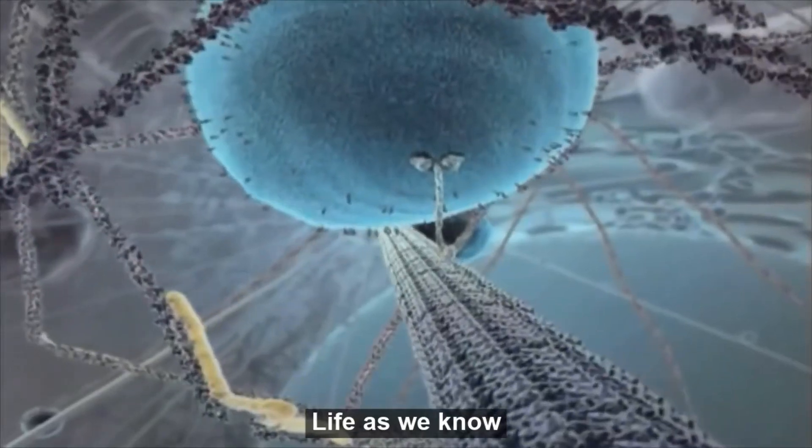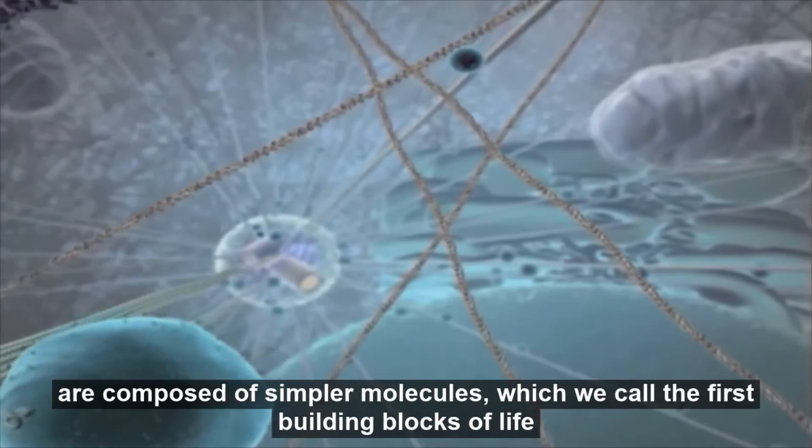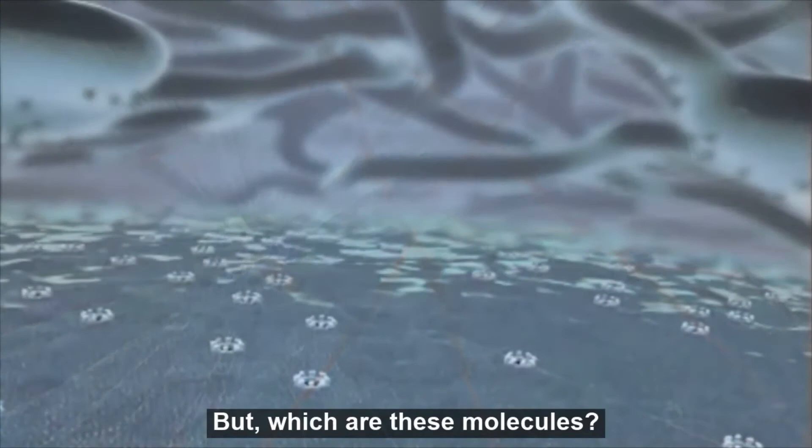Life, as we know, shows an incredibly high level of complexity and sophistication. However, organic macromolecules such as RNA or DNA are composed of simpler molecules, which we call the first building blocks of life. But which are these molecules? How did they form? And where?